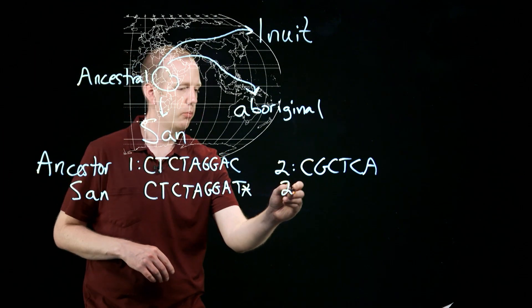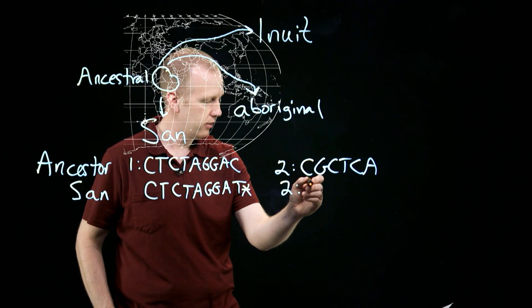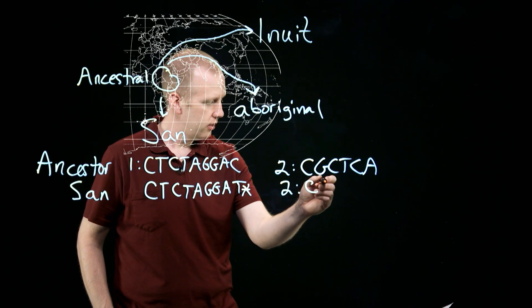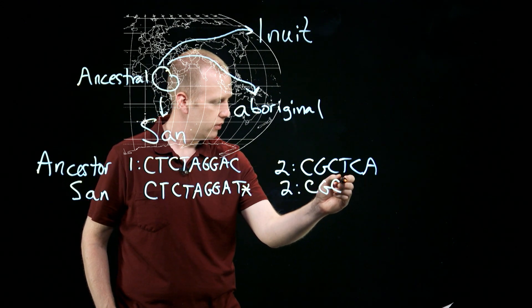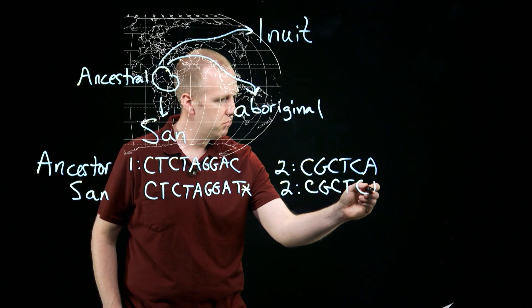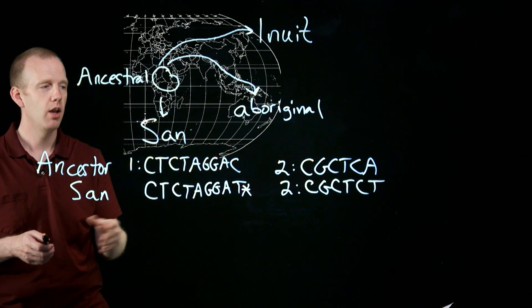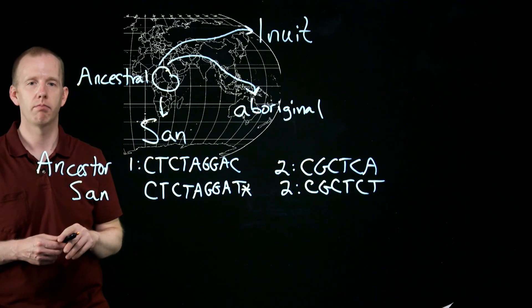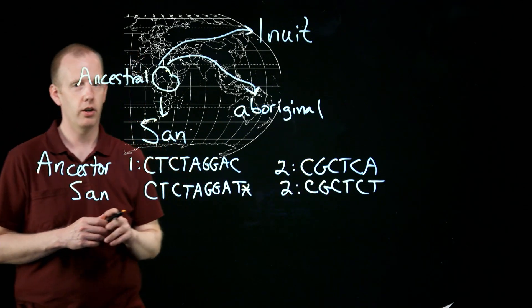And we can also look at chromosome 2 and what might have happened to it. That's C-G-C-T-C-T. So again, one change, one difference between generations ago and the modern population, just one sequence change out of the six that we're looking at currently.